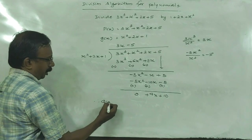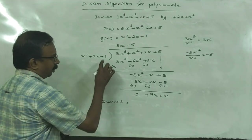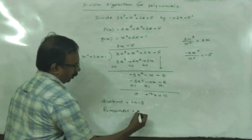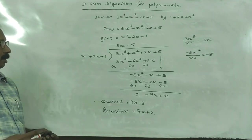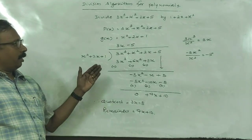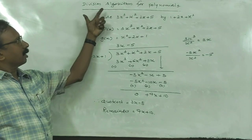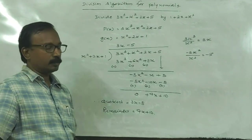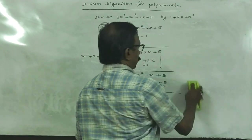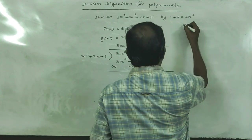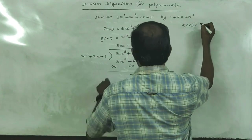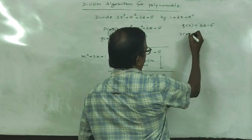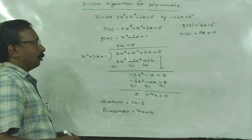Therefore the quotient is 3x - 5 and the remainder is 9x + 10.